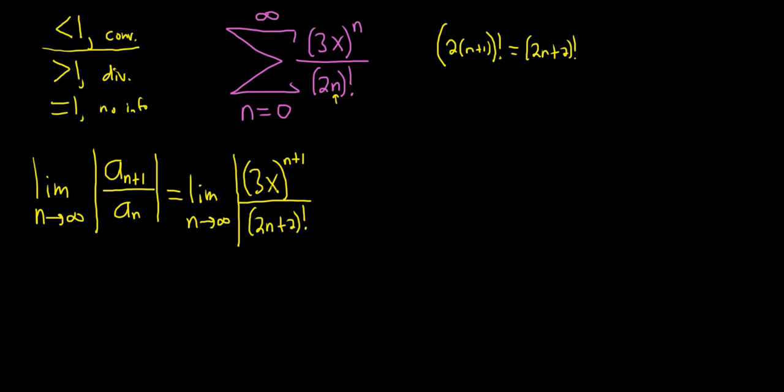And you might be wondering what are you doing? You're supposed to divide by a sub n. That's exactly correct. However instead of dividing by a sub n we'll multiply by the reciprocal. It's just much easier. So basically that just means you flip this and you multiply. So times 2n factorial over 3x to the n. It's just much easier to multiply by the reciprocal rather than dividing.